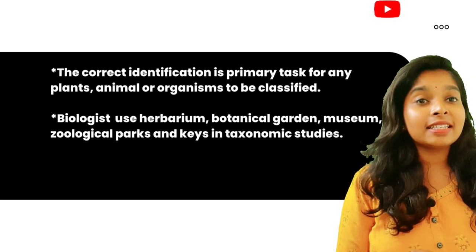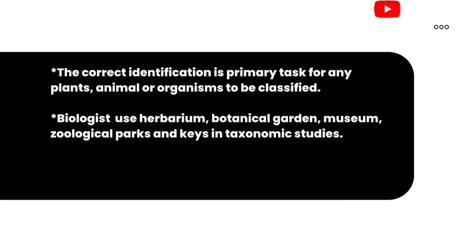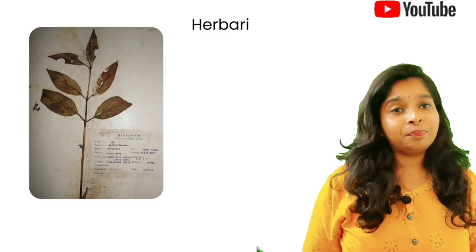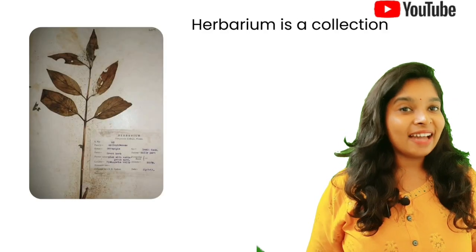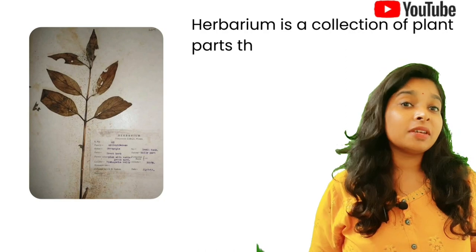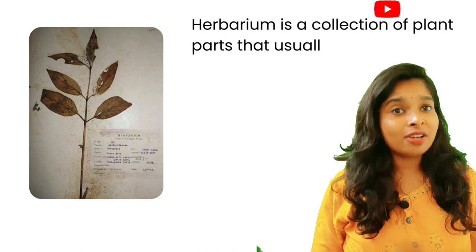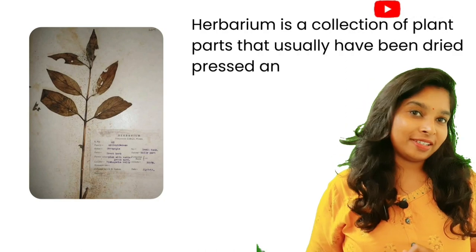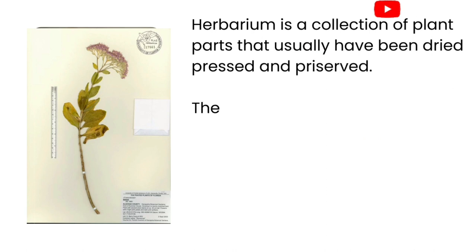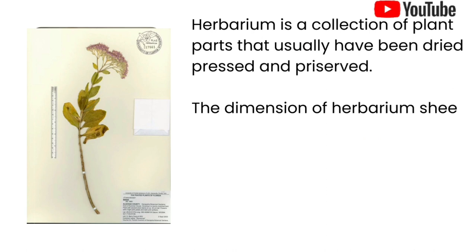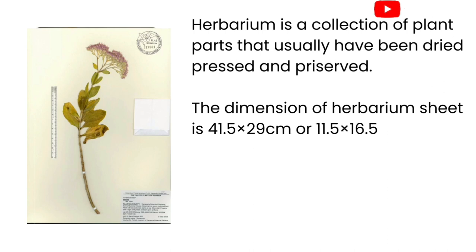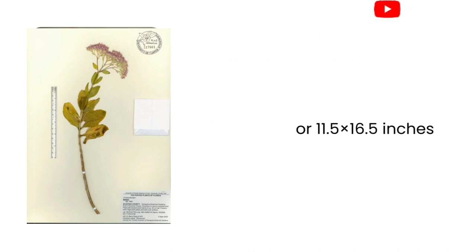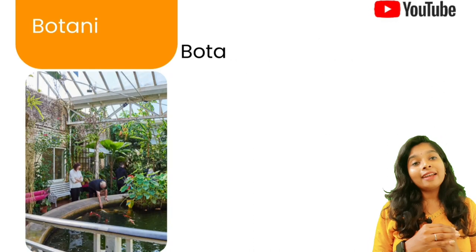Herbarium is a collection of plant parts which have been usually dried, pressed, and preserved on a sheet. The dimension of a herbarium sheet is 41.5 × 29 centimeters, or 11.5 × 16.5 inches.